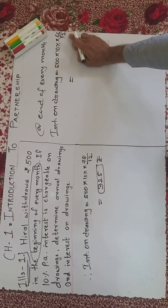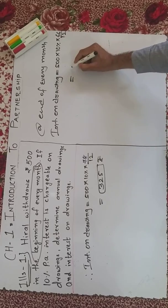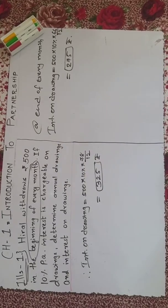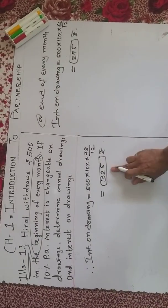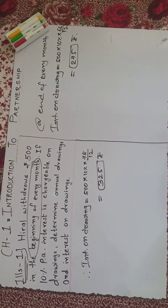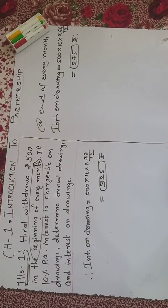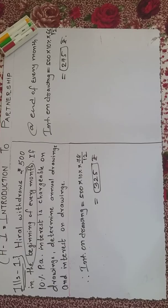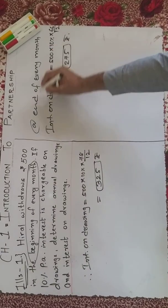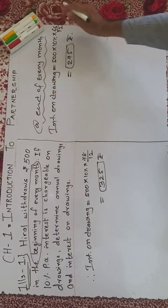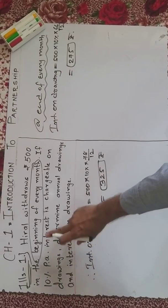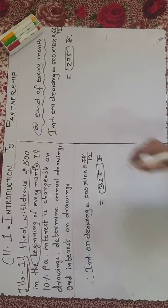The answer is 325 rupees. And 500 into 10% into 66 upon 12 gives us the answer 275 rupees. Now a question comes in your mind: why do we take 78 at the beginning of every month and 66 at the end of every month?